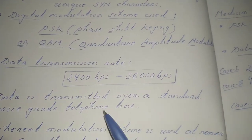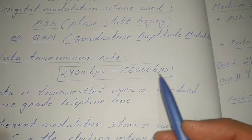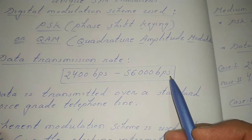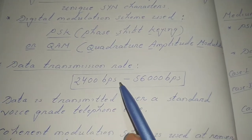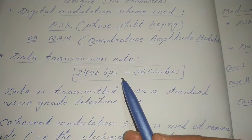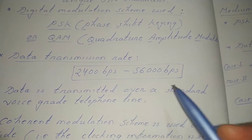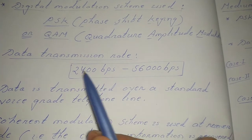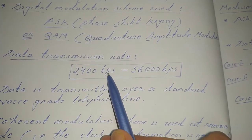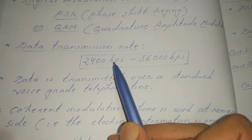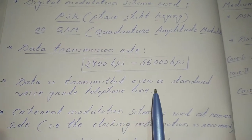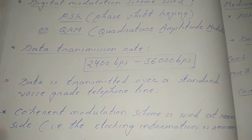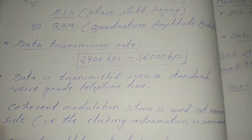The data transmission rate is in between 2400 bits per second to 56,000 bits per second, or 56 kilobits per second — that is the data transmission rate range. In the case of asynchronous voice band modem, the data transmission rate is below 2400 bits per second.